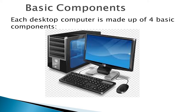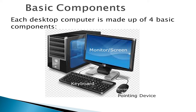Let's look at the main components of a personal computer. Each desktop computer is made up of four basic components. In the picture, you see the flat panel display, which is the monitor or the screen, the keyboard, a mouse, and a system unit.